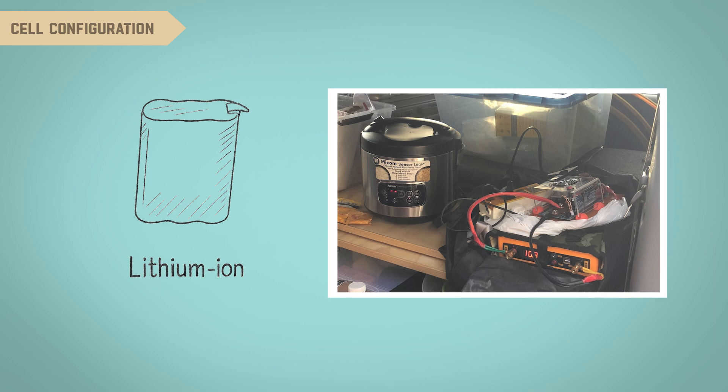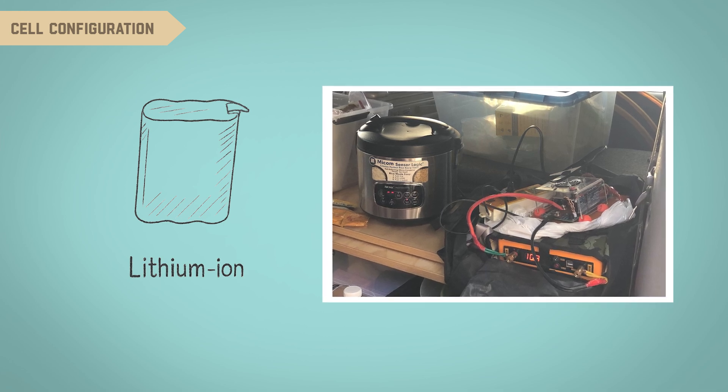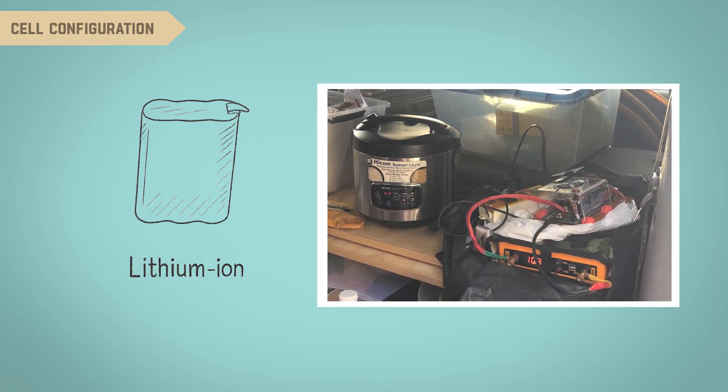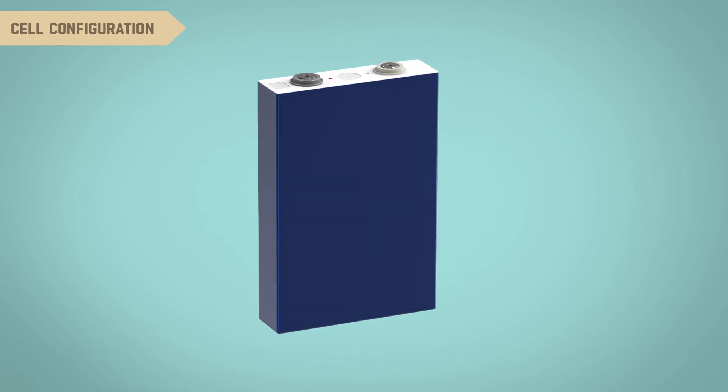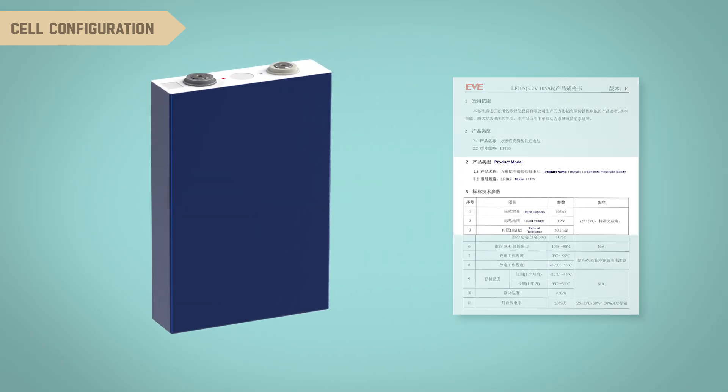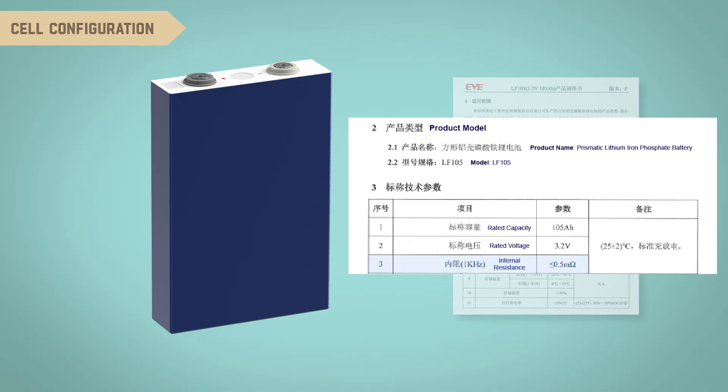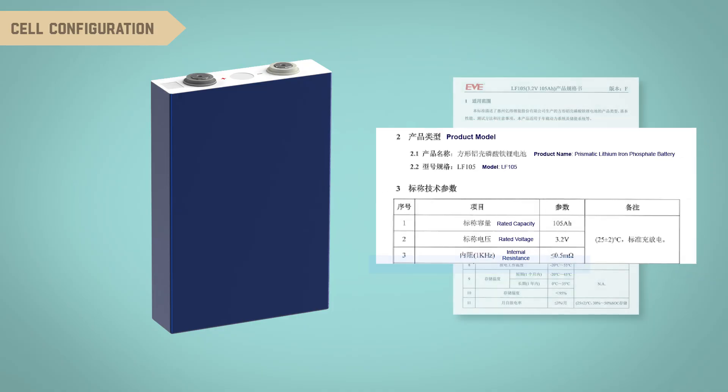However, keeping lithium-ion batteries in a vehicle for extended periods always raised safety concerns for me. That's why I decided to switch to lithium iron phosphate batteries as the main power source. These batteries have low internal resistance, which means they remain cool during charge and discharge cycles, providing excellent discharge performance.